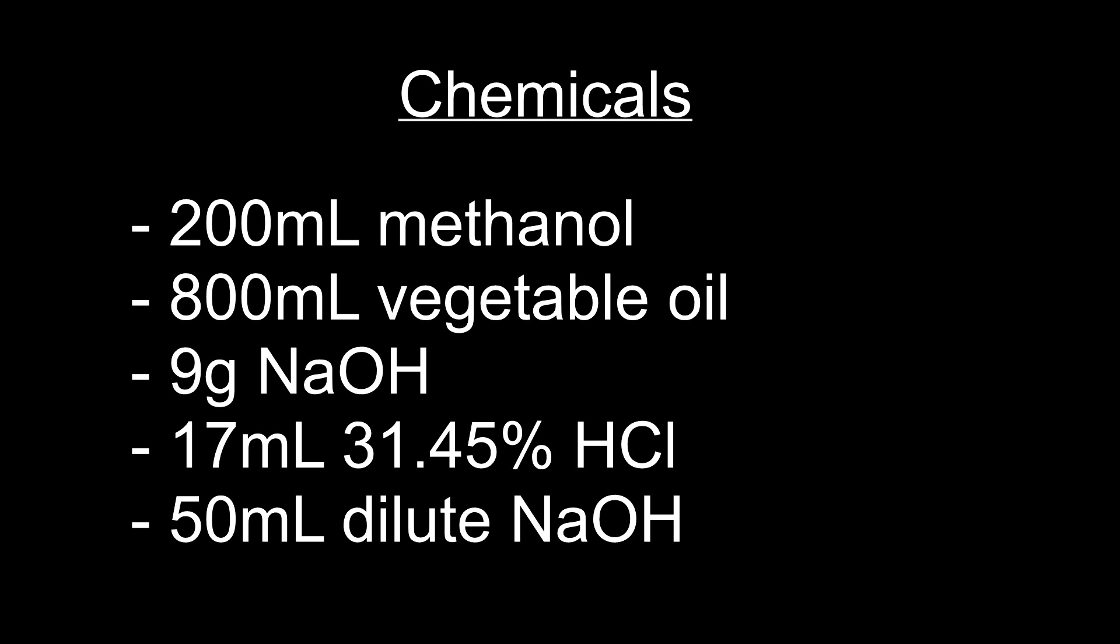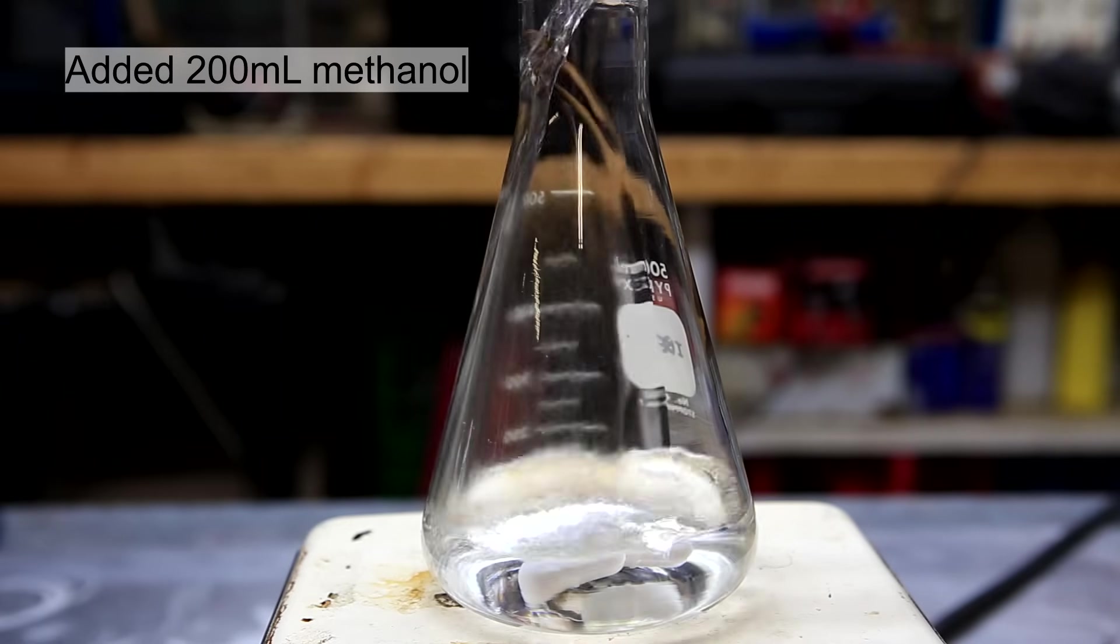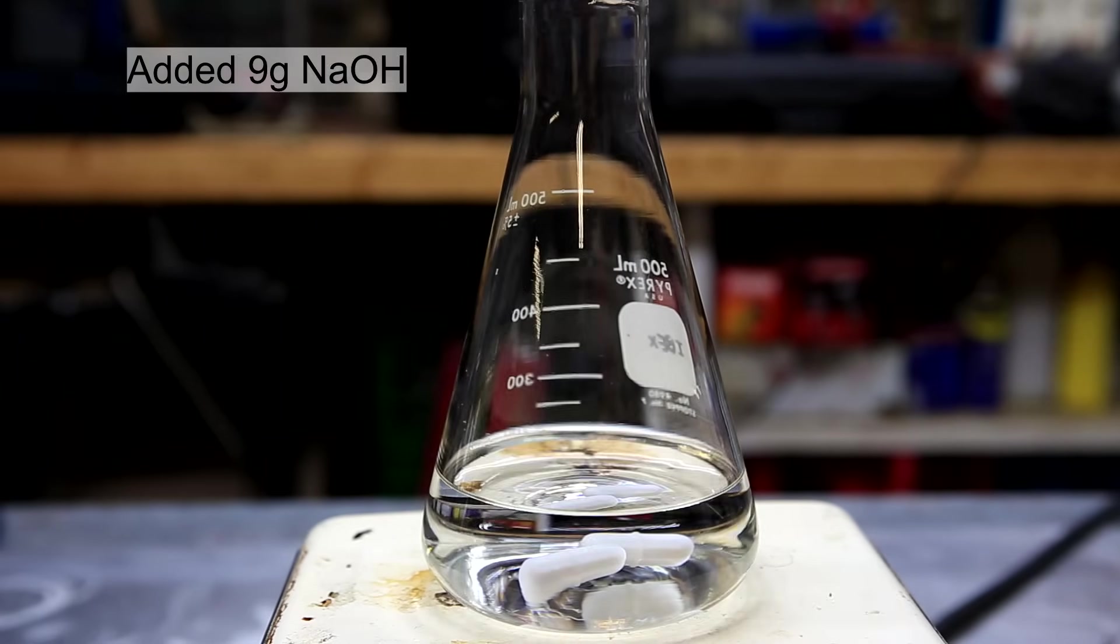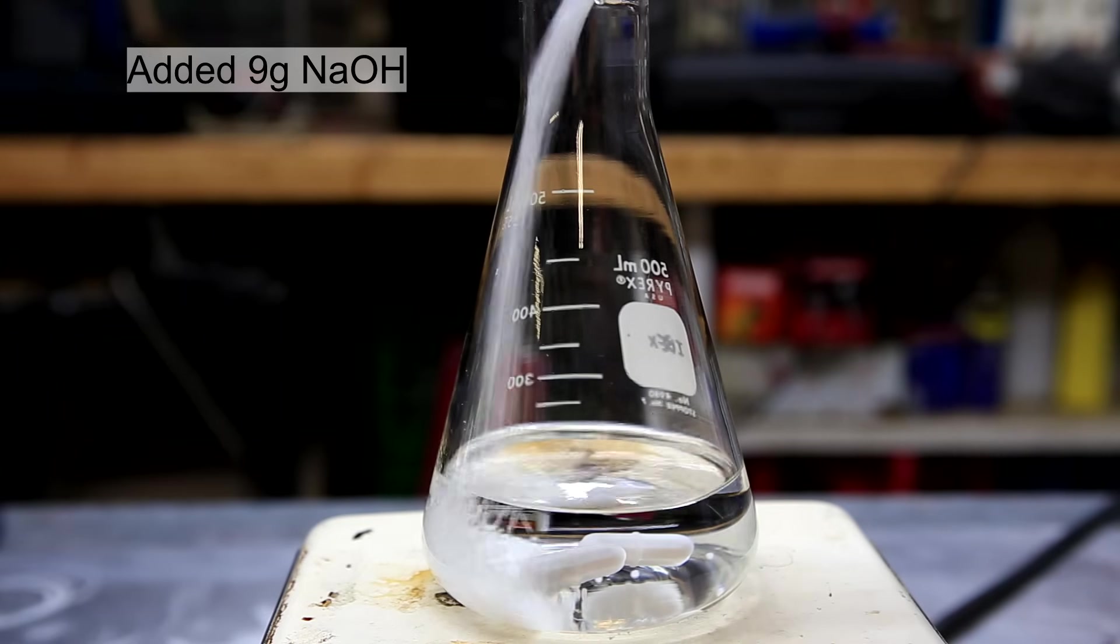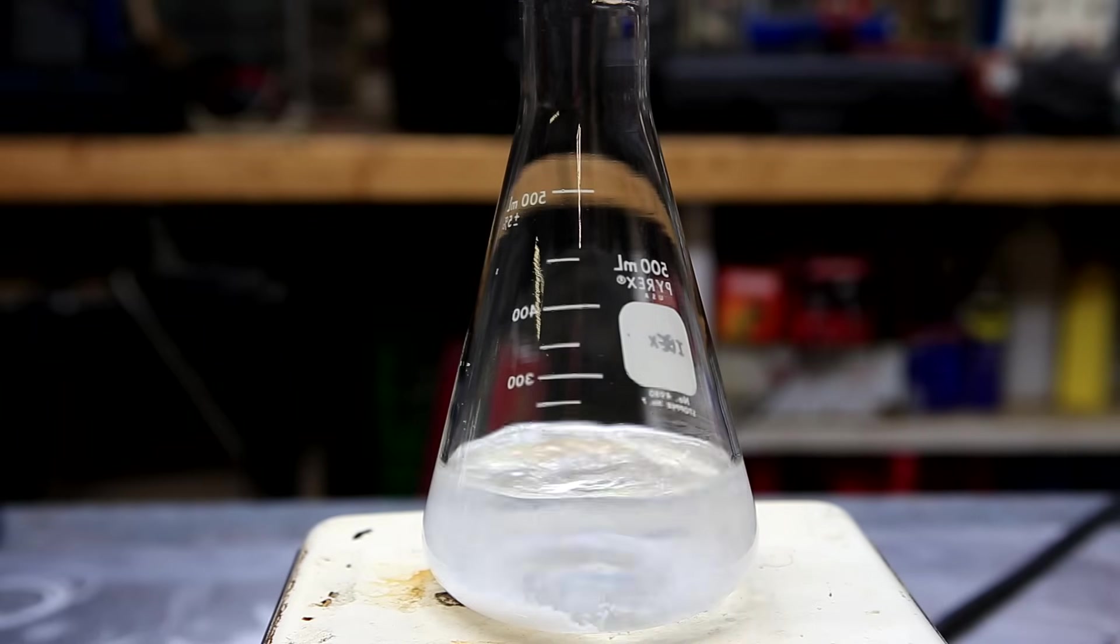The yield from different experiments and from different oils is probably going to be quite variable. To an Erlenmeyer flask was added 200 milliliters of methanol. This was followed by the addition of 9 grams of sodium hydroxide. This was stirred until the sodium hydroxide had dissolved.